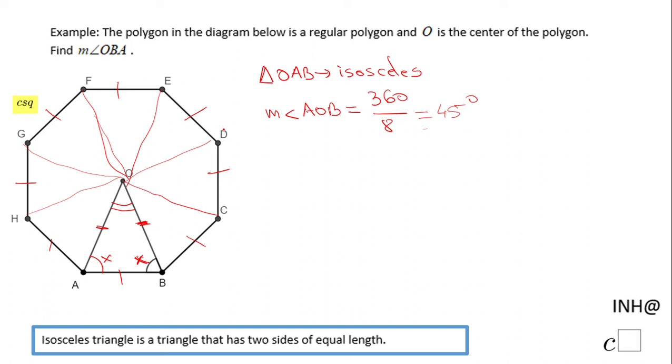So now if we go back to triangle AOB, like I said, we can find X now because the sum of the interior angles of this triangle is 180. X plus X, the two base angles, plus the angle that we found out, 45, equals 180.